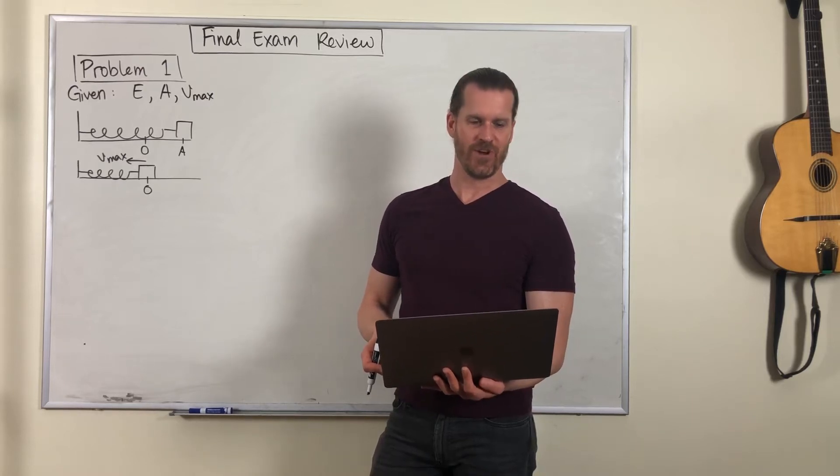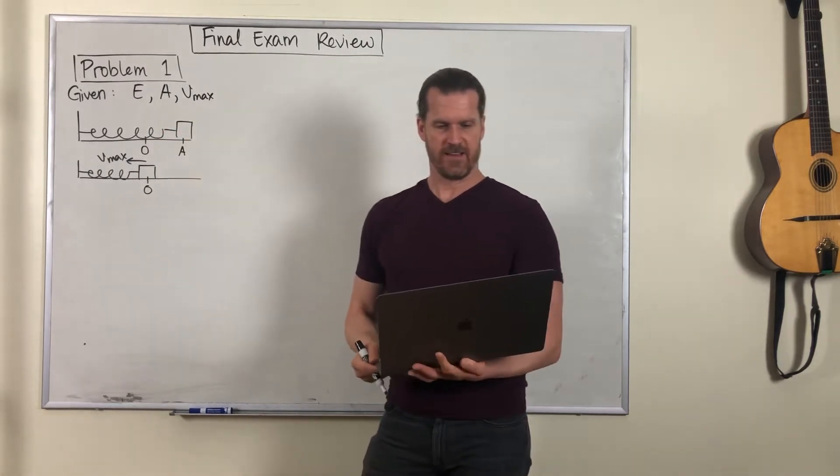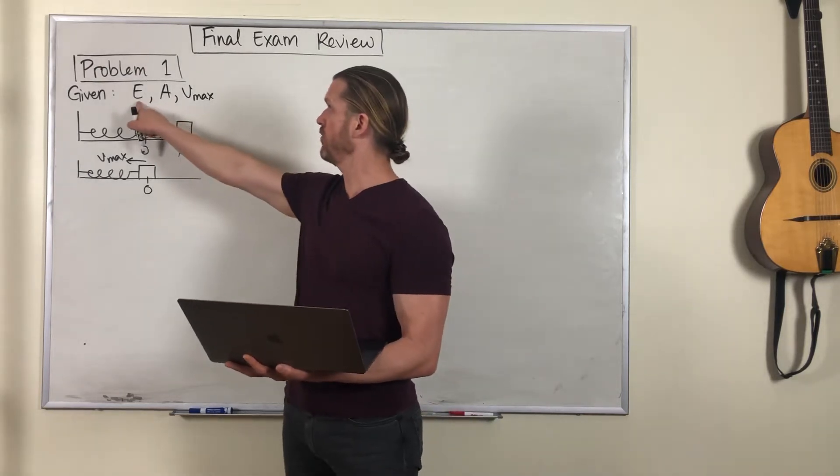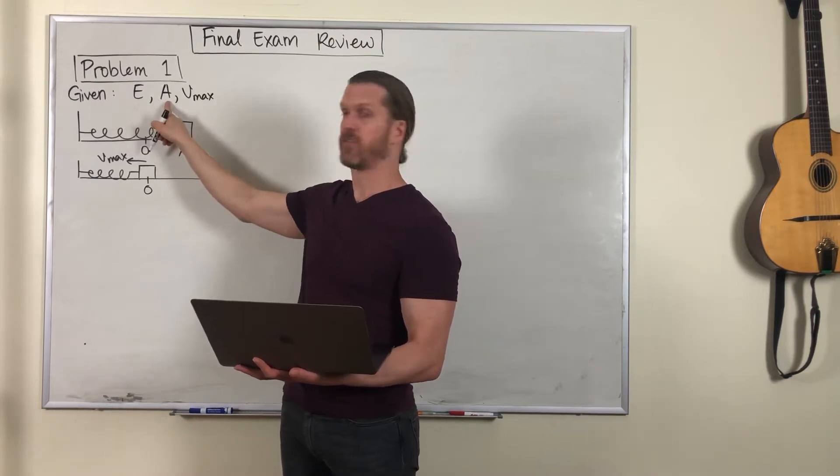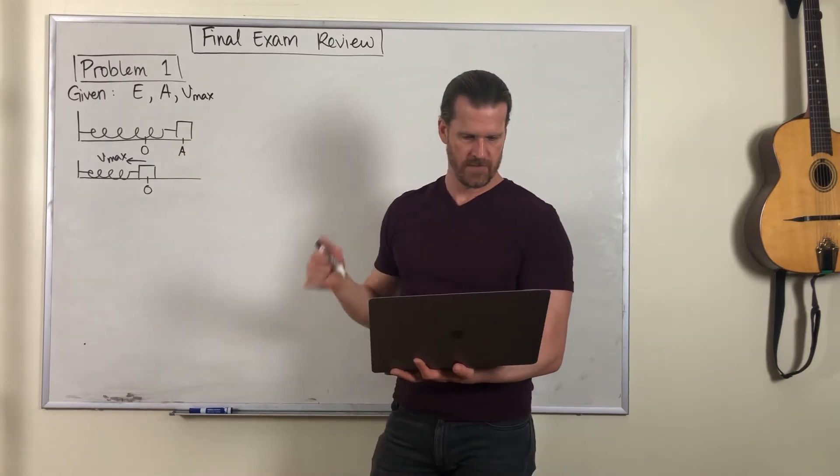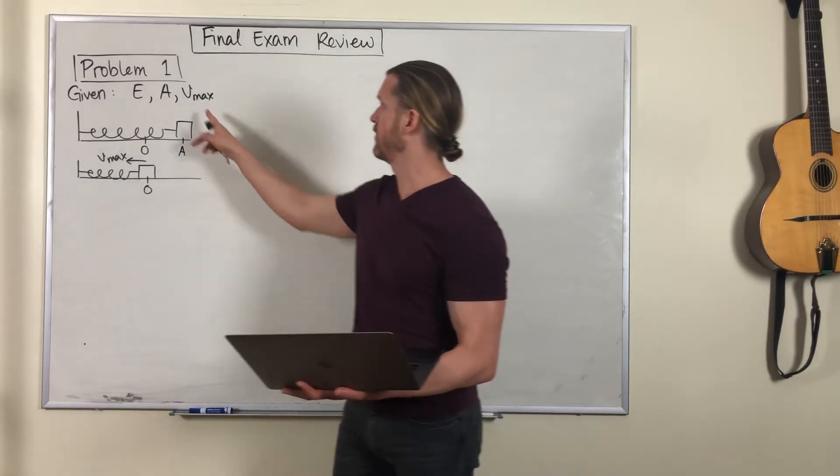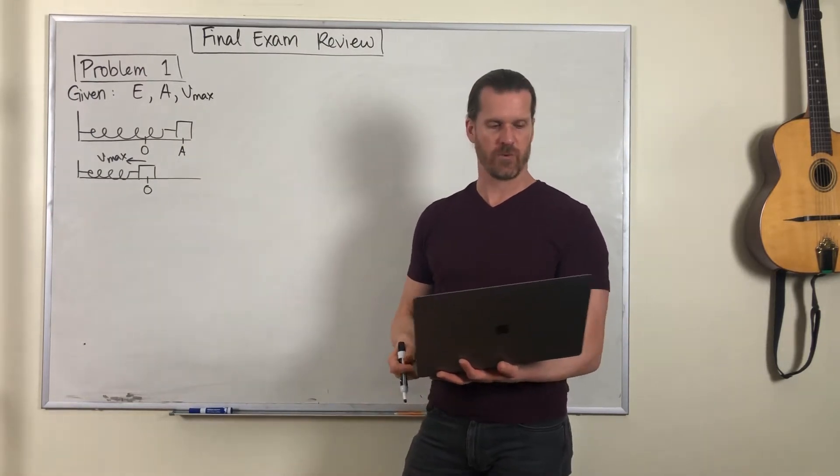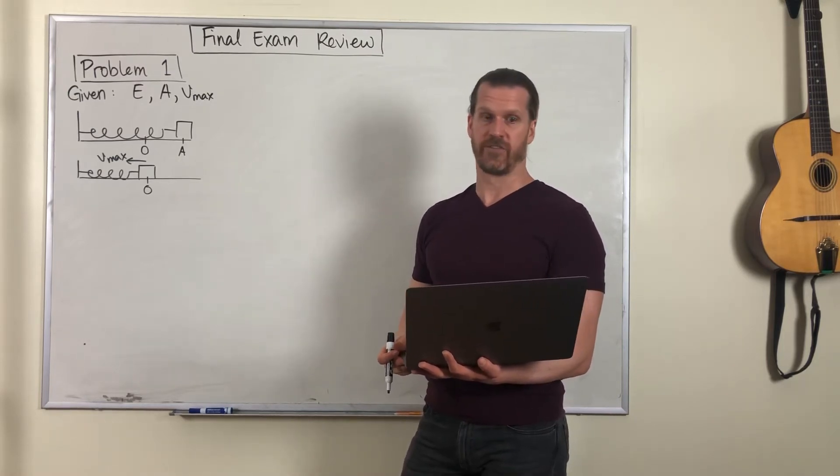Final exam review problem number one. We have a horizontal block spring system, and we're given a little bit of information about this. We're told the total energy of the system, the maximum displacement or amplitude, and the maximum speed. We've got those three pieces of information, and we're going to answer a bunch of questions about the system.